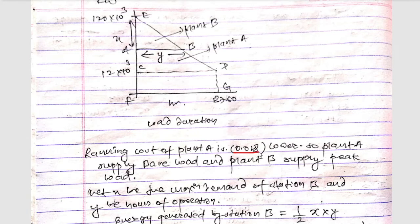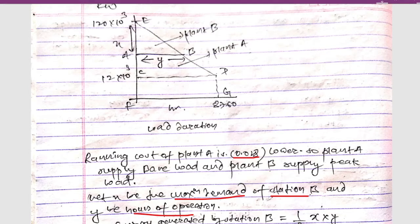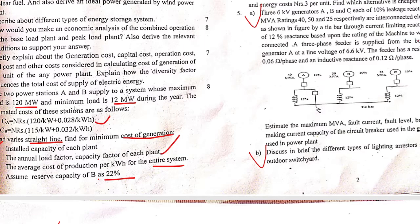Since the running cost of plant A is 0.028 per kWh, which is lower than plant B, plant A will supply the base load and plant B will supply the peak load. Let X be the maximum demand of station B and Y be the hours of operation. The maximum demand is 120 × 10³ kW and the minimum load is 12 × 10³ kW.